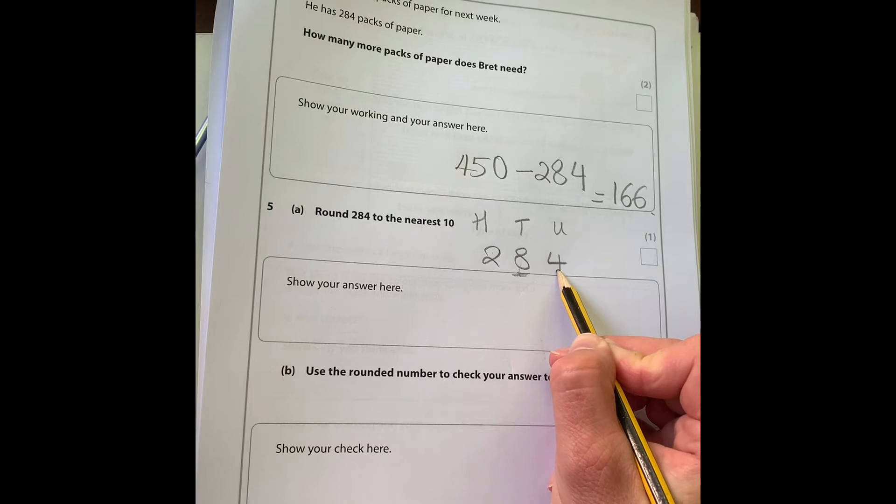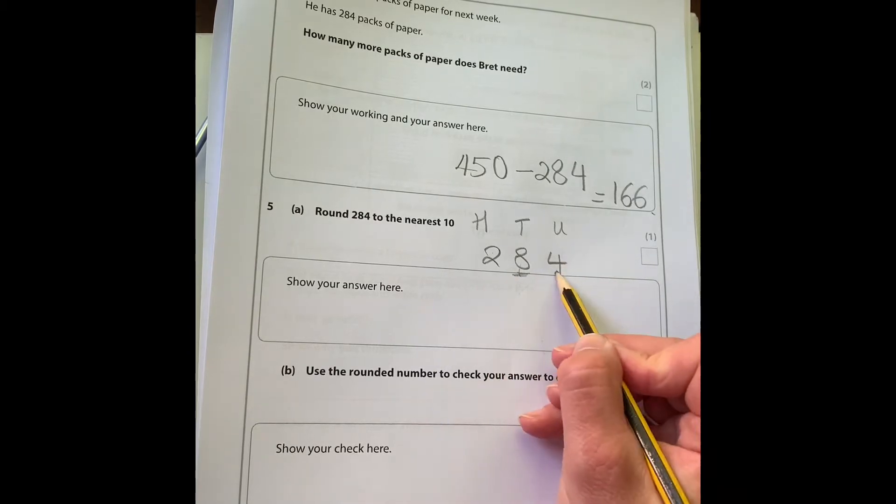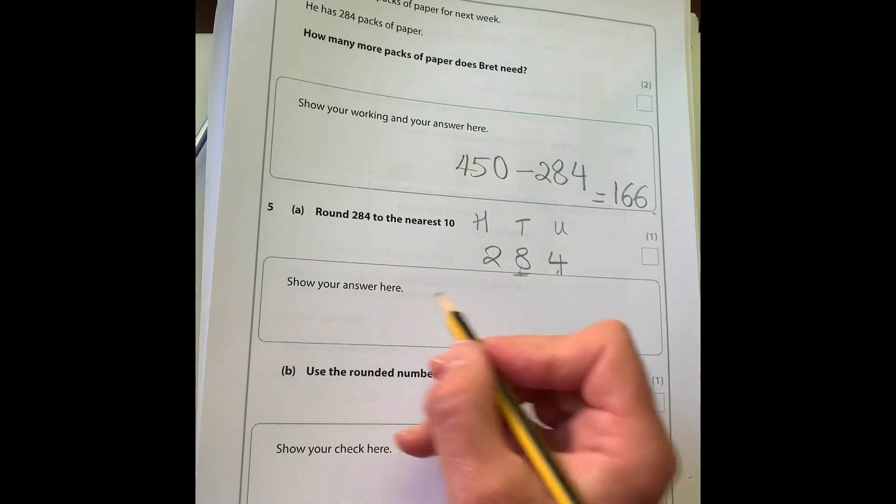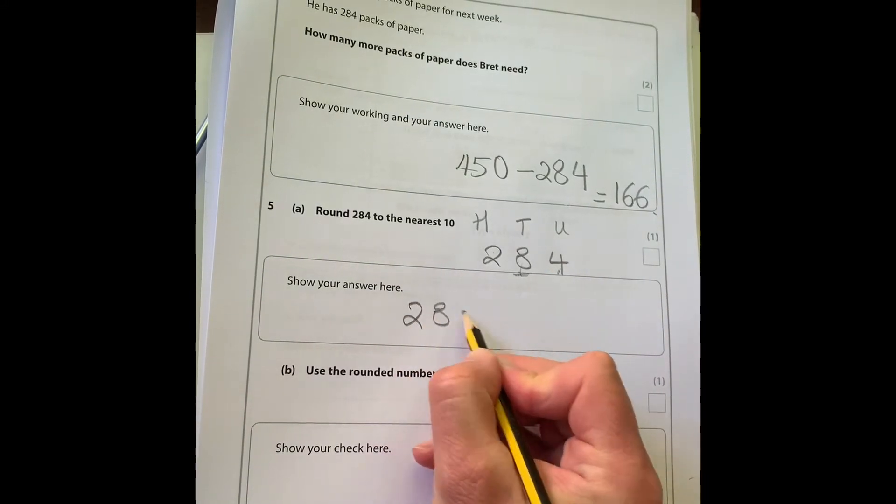The rule is if it's five or above we round up. If it's four or below we let it go. Because it's four we're not going to round up, we're going to leave it as it is, so the answer would be 280.